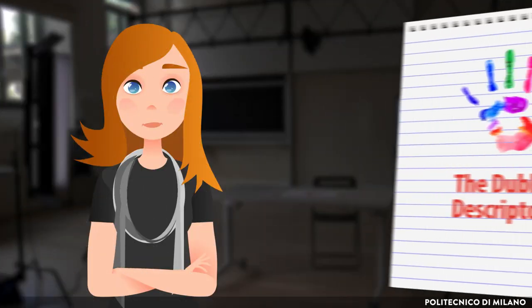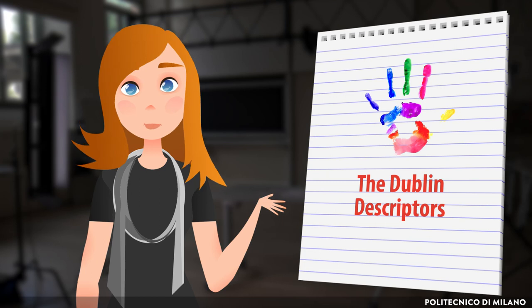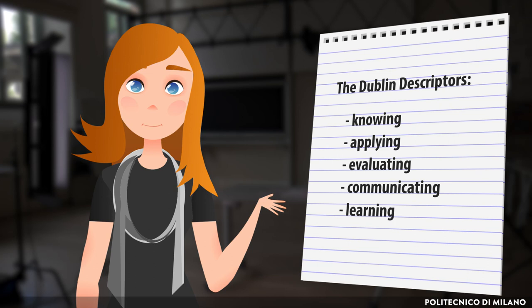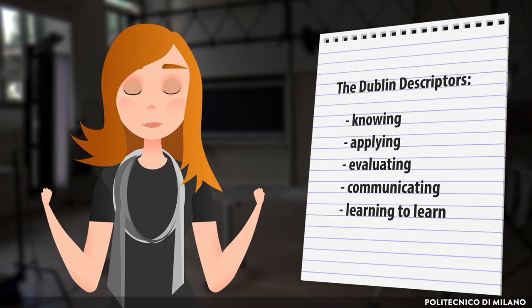So, to sum up, the Dublin Descriptors are a system of descriptors of the intended learning outcomes: knowing, applying, evaluating, communicating, learning to learn. They don't just inspire us to widen the creation of our intended learning outcomes, but they can also help us map and label the intended learning outcomes we create, so that they may be more comparable within the European educational system.